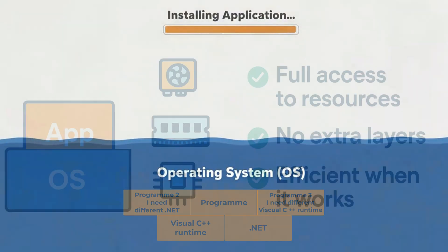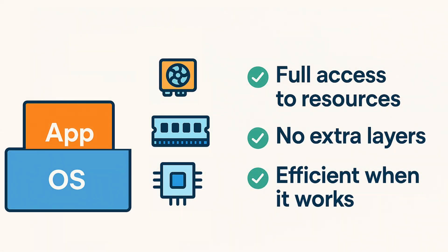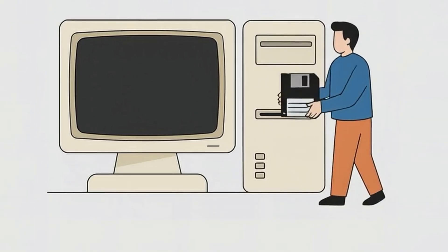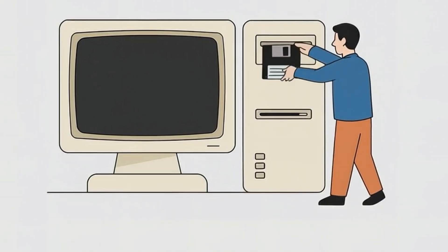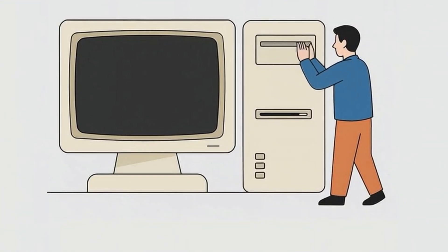Of course, there are advantages to installing directly too. The app can use whatever resources it needs without being limited, unlike a VM. If your machine has 32 gigs of RAM, the program doesn't have to reserve a chunk in advance — it just uses what it needs, when it needs it. And because it's running right on the OS, it has direct access to all the hardware — the CPU, GPU, memory, and storage — without any extra layers in between. That's the traditional way of doing things, going right back to the early days of computing.